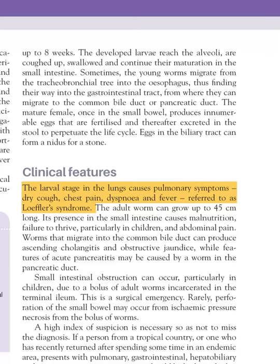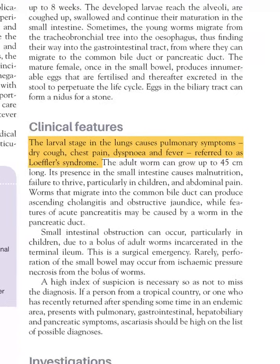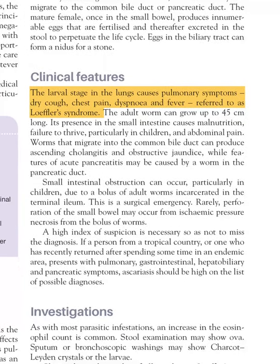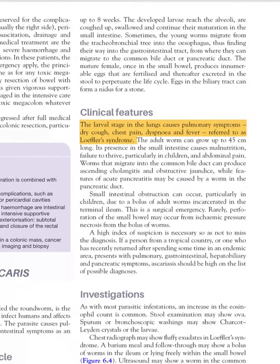The larvae are coughed up from the alveoli, pass through the esophagus, and reach the small intestine. In the lungs, this causes Löffler syndrome: dry cough, chest pain, shortness of breath, and fever. In the intestine, large worms cause obstructive symptoms, iron deficiency anemia, malnutrition, failure to thrive, and abdominal pain. Worms migrating to the bile duct cause obstructive jaundice, and to the pancreas cause pancreatitis.